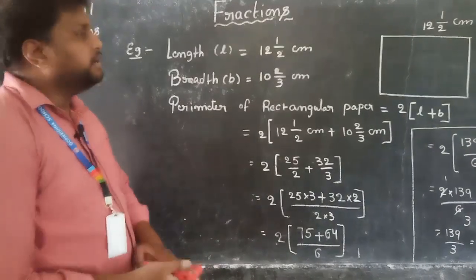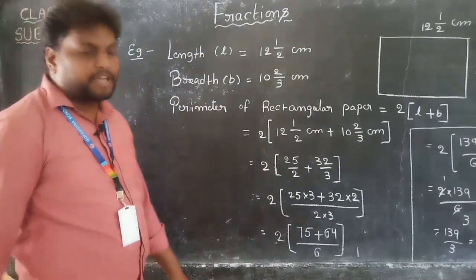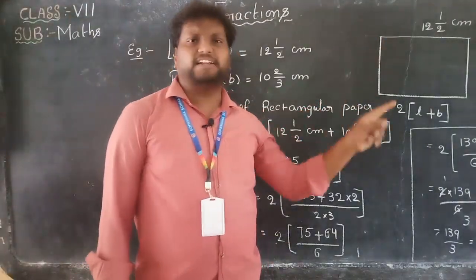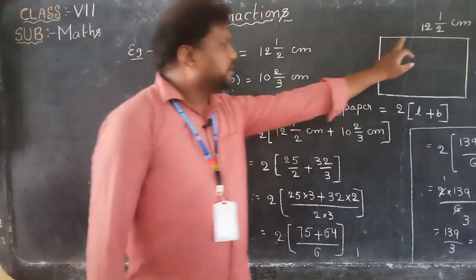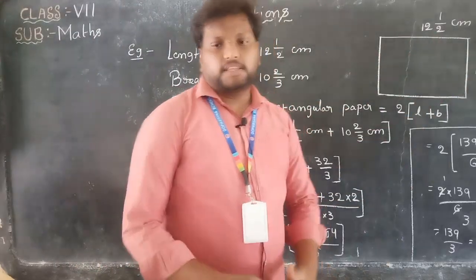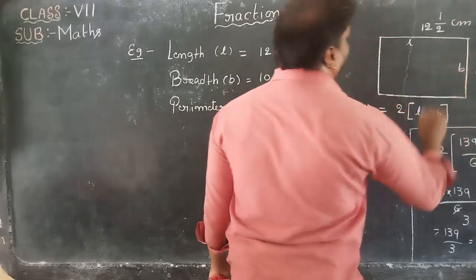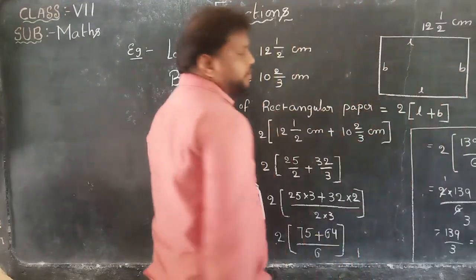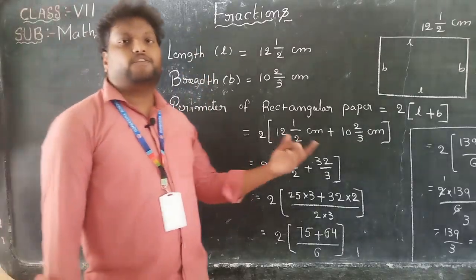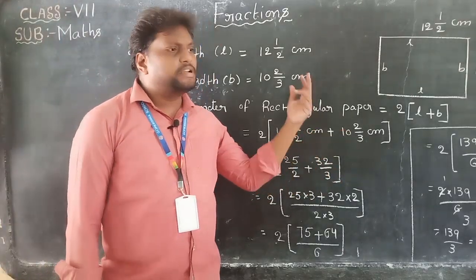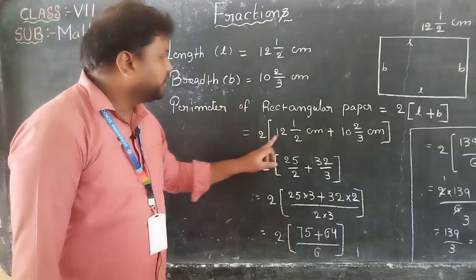Let me explain once again. We have one rectangular paper — any rectangle shape has two equal lengths and two equal breadths. The length and breadth on opposite sides are equal. The perimeter formula for a rectangle is 2 into (L + B).